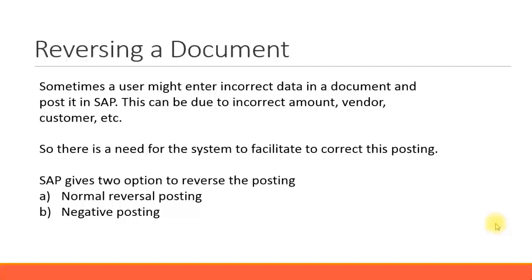There are two options to reverse a document. One is the normal reversal posting, which is the standard and the recommended practice when reversing a document. The other option is to post a negative posting. For example, if you have posted $500, you do a posting for minus $500. This is a very rarely used scenario and it's always better to use the normal reversal posting method.